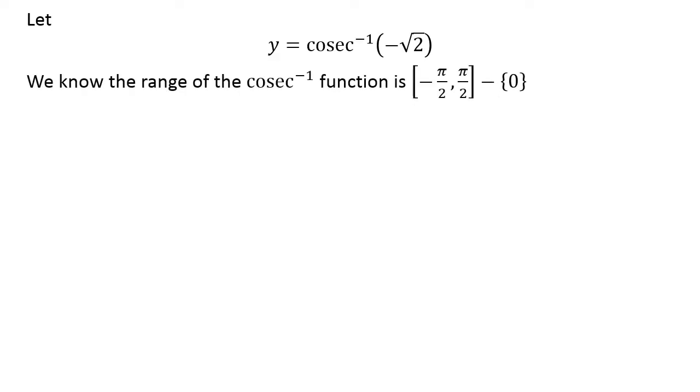Now, we know the range of the cosec^(-1) function is the closed interval [-π/2, π/2] excluding 0.